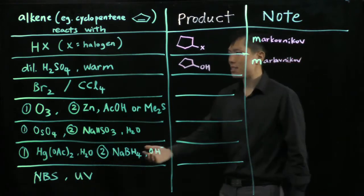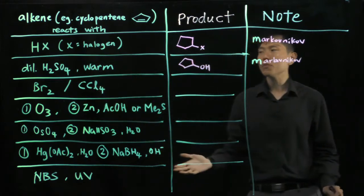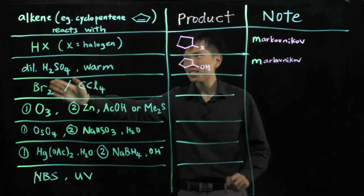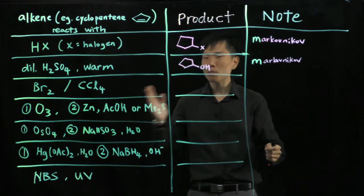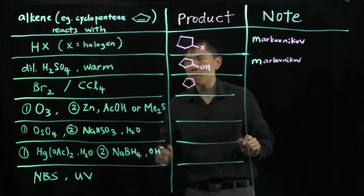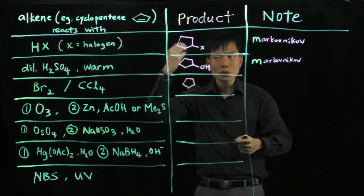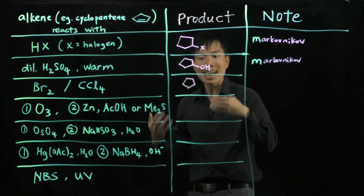The third case, when you react bromine dissolved in CCl4, this is a nonpolar solvent. So in this case, the double bond opens up and the Br-Br will join. But you have to be careful in your drawing because the bromine must join in the opposite direction. So we call it a trans addition, an anti addition.